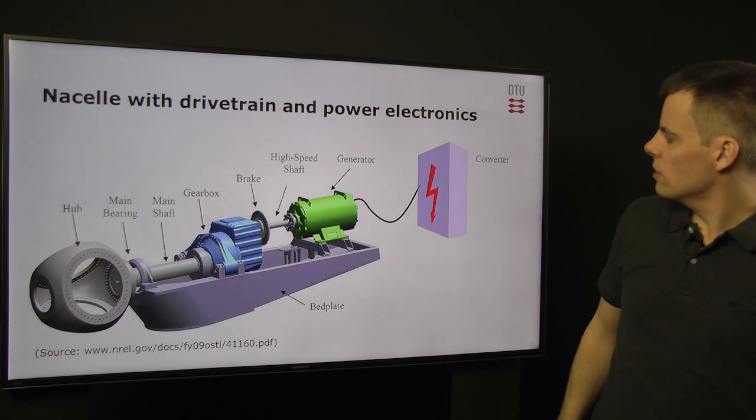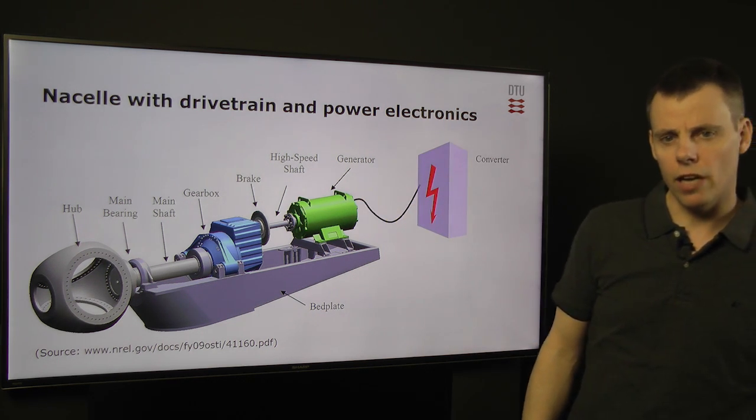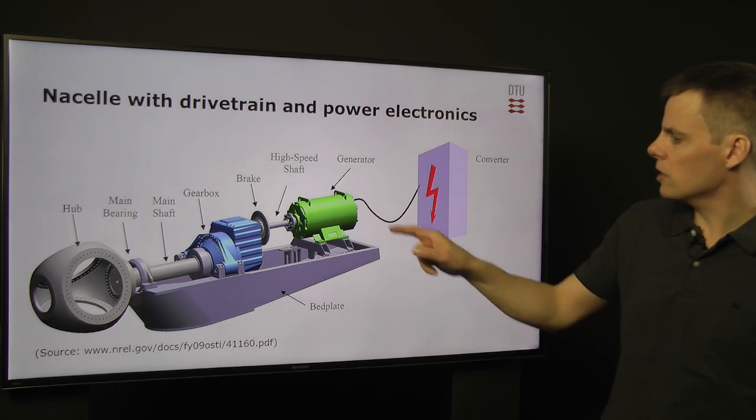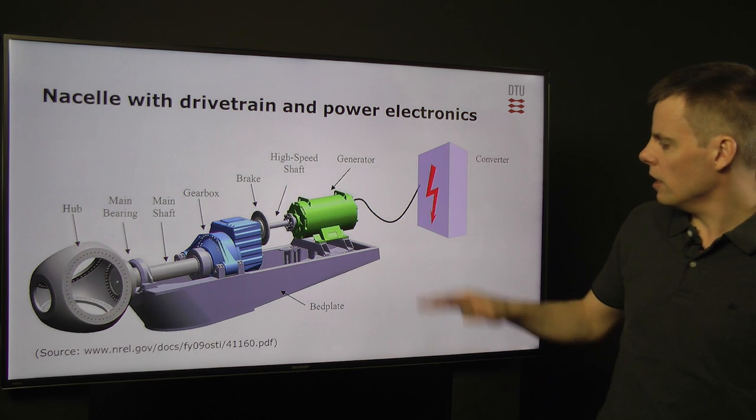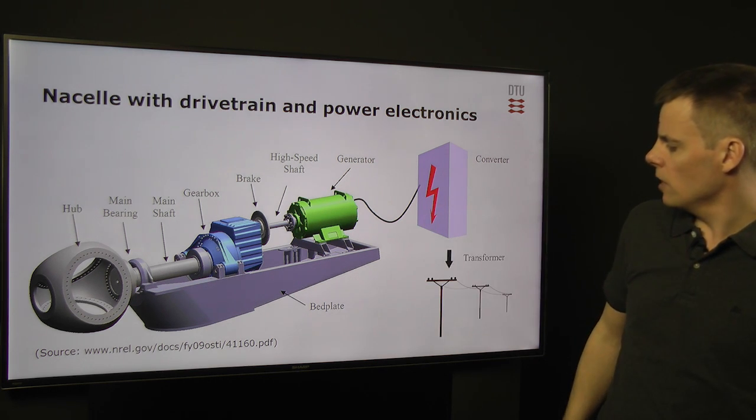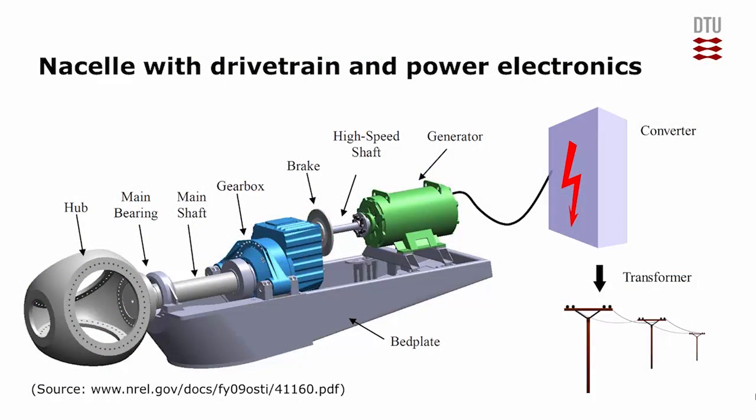The generator is connected to the converter. Typically, we have a variable speed turbine, which a converter can convert the speed of the generator into the grid frequency. And this is then through some transformation into the grid.